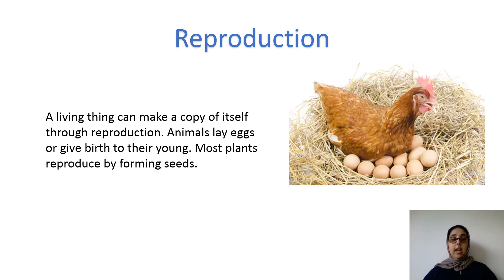Reproduction. A living thing can make a copy of itself through reproduction. Animals lay eggs or give birth to their young, and most plants reproduce by forming seeds.